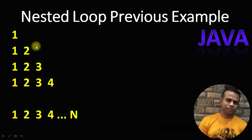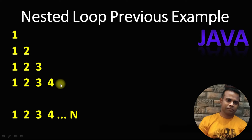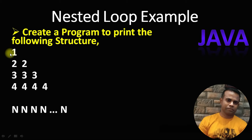The previous day we learned an example where the first line prints 1, the second line prints 1 2, and the third line prints 1 2 3 — each line comes as a sequence. But today, the first line will only print 1, the second line will print 2 two times, the third line will print 3 three times, the fourth line will print 4 four times, and so on.